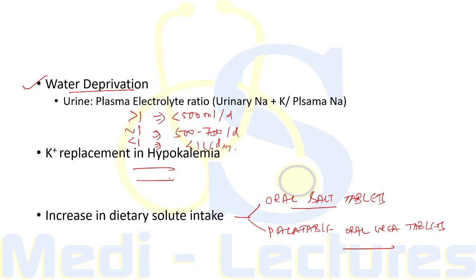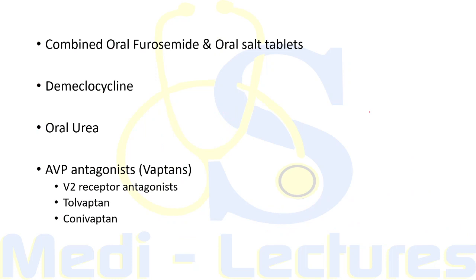Potassium replacement in hypokalemia serves to increase plasma sodium concentration and is an important treatment strategy. Increased dietary solute intake enhances free water excretion and can be achieved with oral salt tablets or palatable oral urea tablets. If fluid restriction, potassium replacement, and increased solute intake fail, pharmacological therapy may be warranted including furosemide with oral salt tablets, demeclocycline, urea, and AVP antagonists.